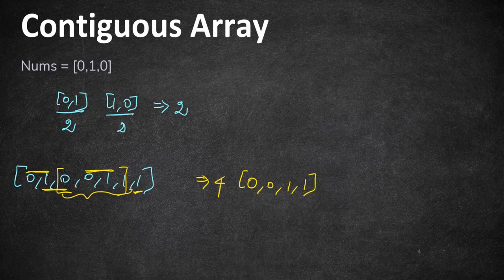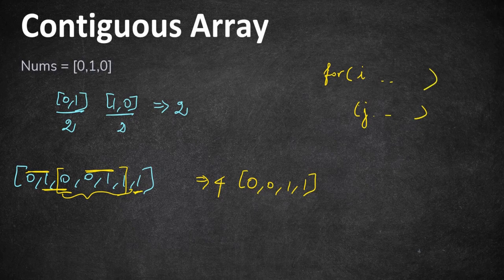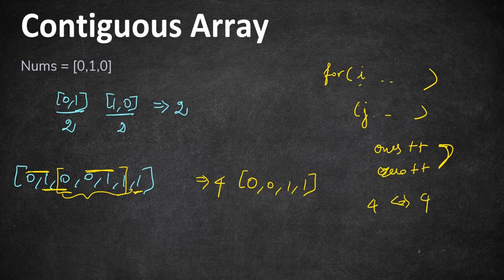How are we going to approach this? The straightforward approach is a brute force solution where we iterate the given array with two for loops using i and j, counting the number of ones and zeros from i to j. Once ones equals zeros, we update our variable max with the maximum length found so far. However, this takes O(n²) time complexity, which is not optimal.